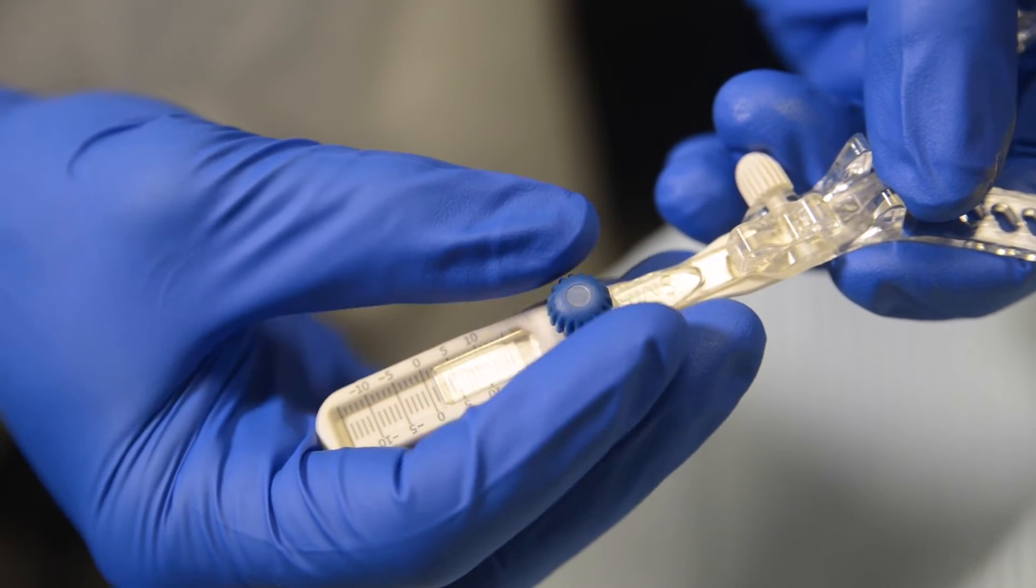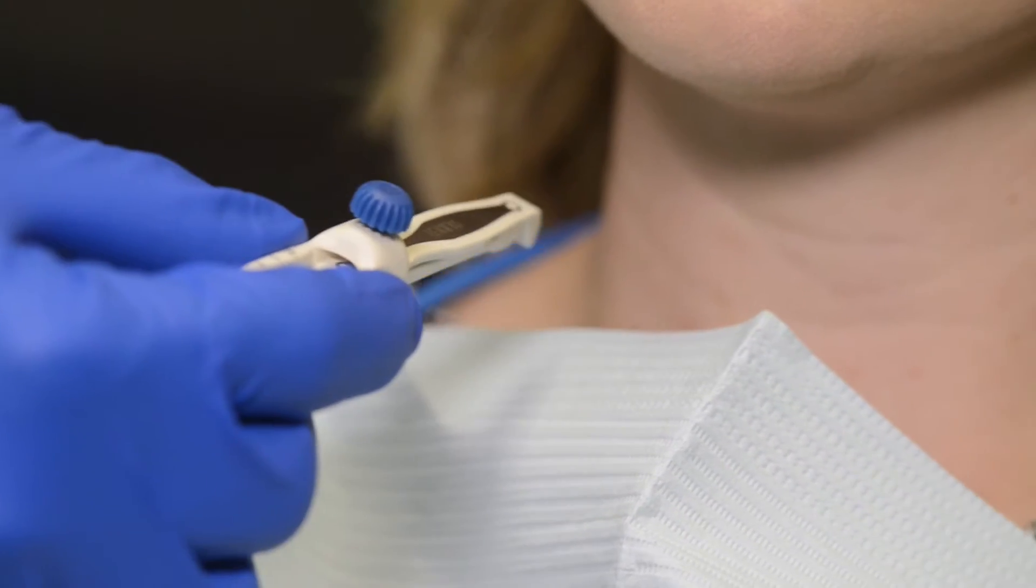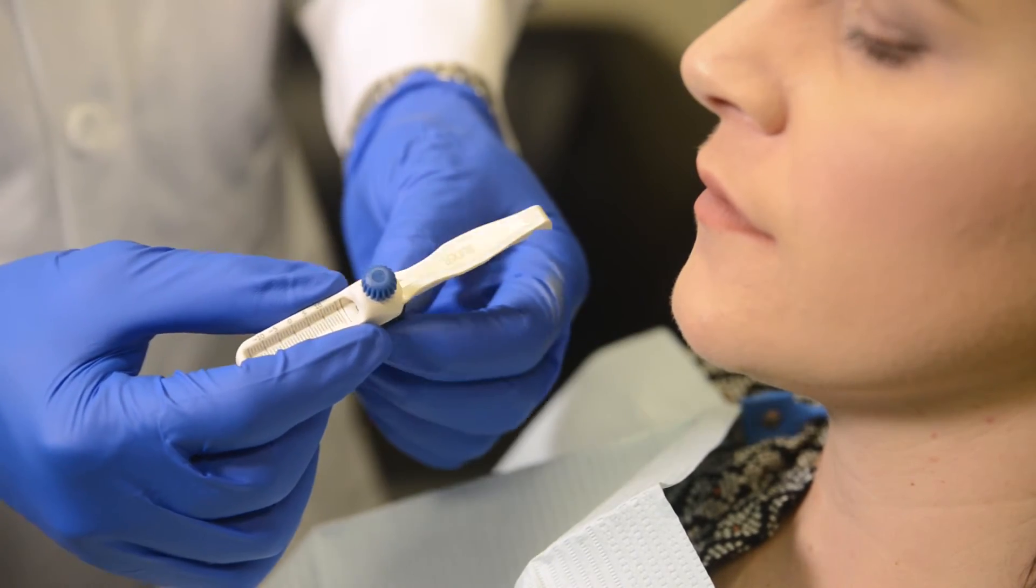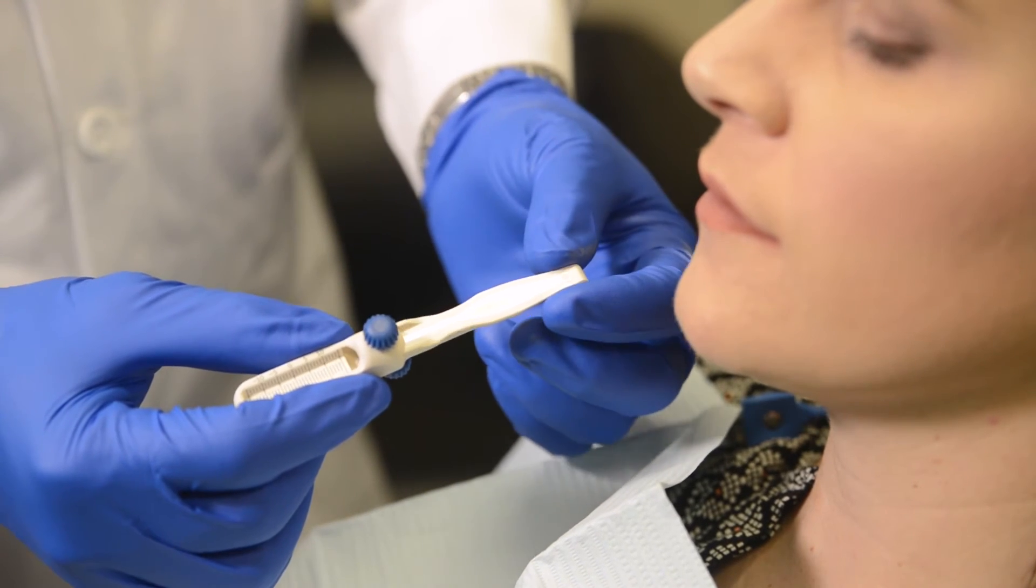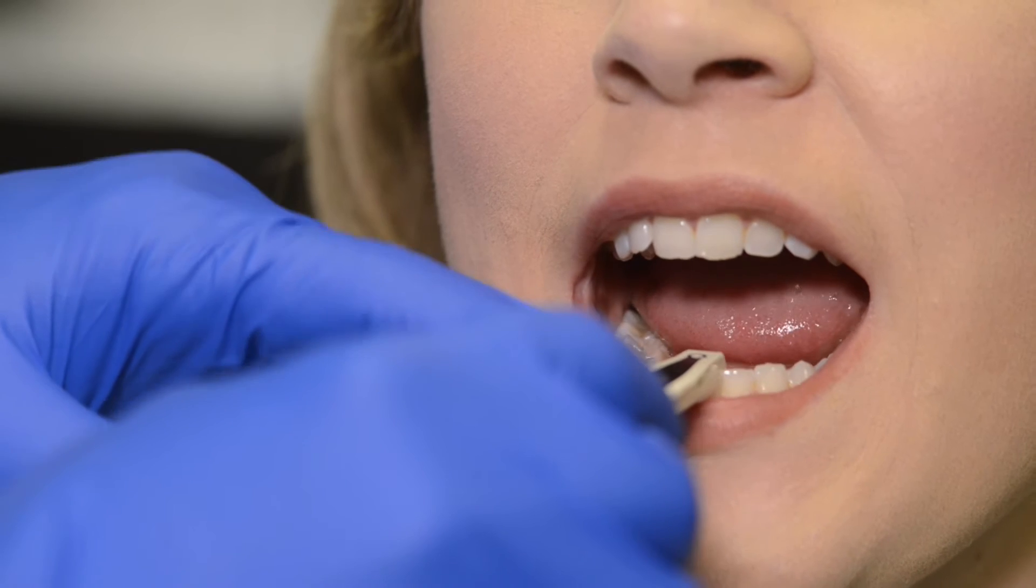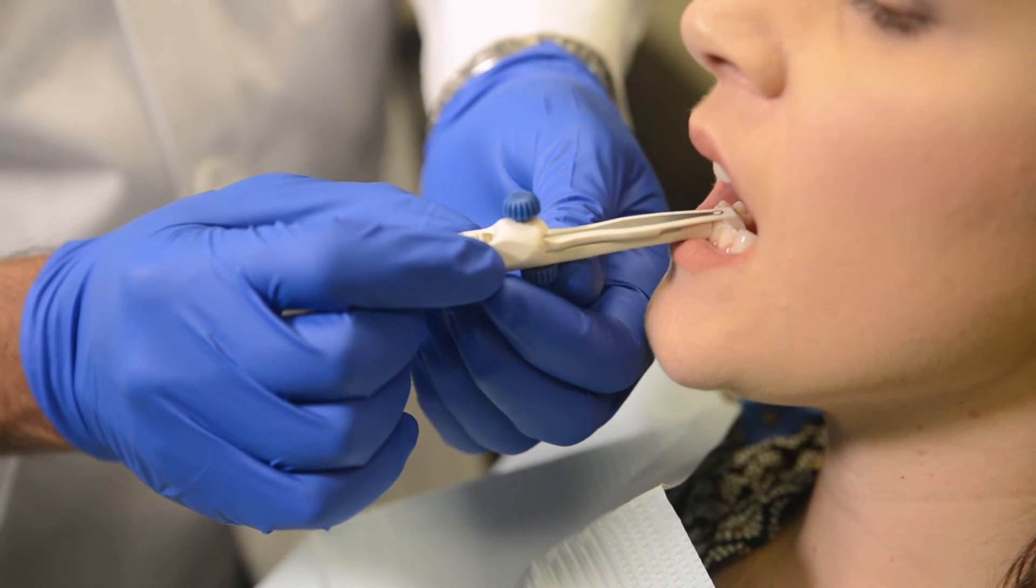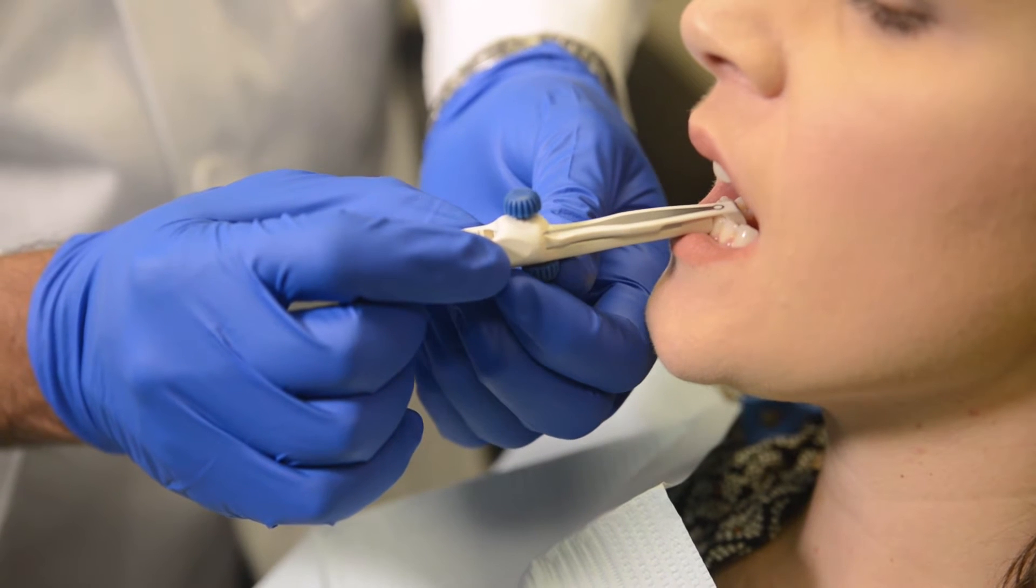Loosen upper and lower screw. Place slider over lower incisors at skeletal midline. Move slider to contact lower anterior. Tighten lower screw to secure slider.